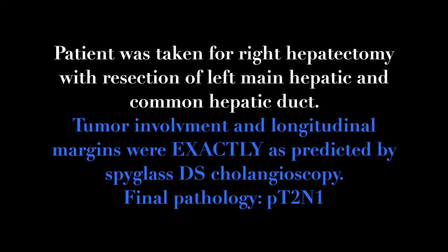The final pathology revealed tumor extent exactly as predicted on cholangioscopy, with final pathology being a pT2N1 tumor with bile duct margins exactly as predicted by cholangioscopy. This is an extremely important example of the use of cholangioscopy to better determine surgical resectability. At Parkview Cancer Institute, we aim to use innovative technology and state-of-the-art science to better improve the outcomes in patients with cholangiocarcinoma.